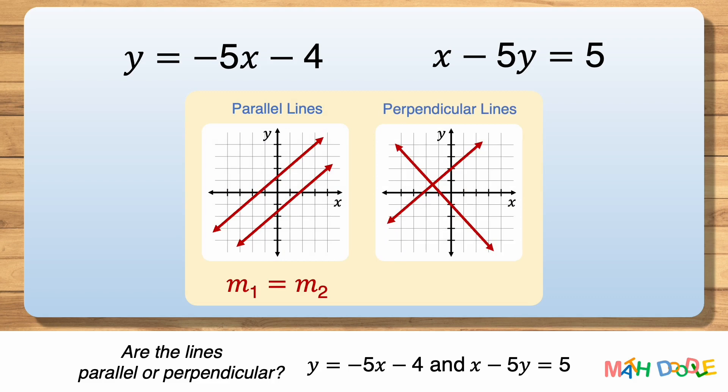The slopes of perpendicular lines are negative reciprocals of each other. In other words, if we multiply the two slopes, their product will be minus one. So to determine if these two lines are parallel or perpendicular, we are going to find their slopes and y-intercepts.